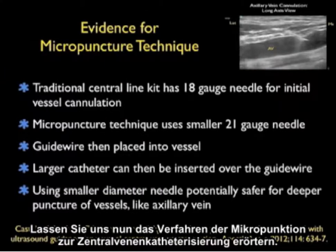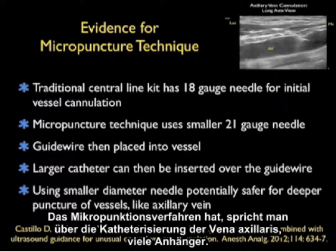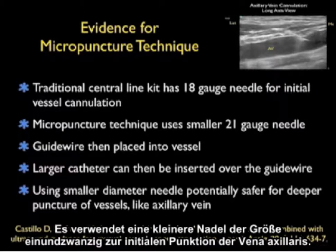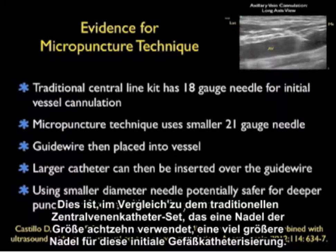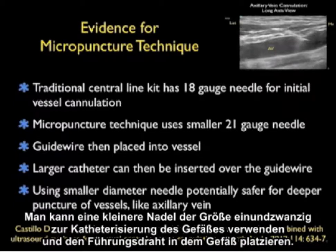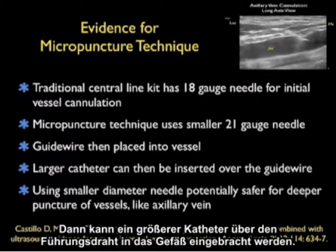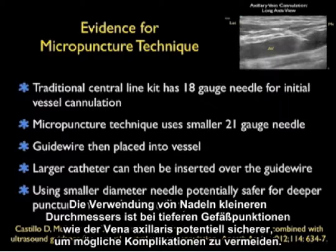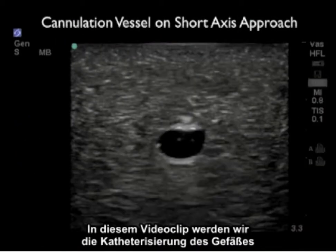Now let's discuss the micropuncture technique for central venous cannulation. The micropuncture technique is well-advocated for axillary vein cannulation as it uses a smaller 21-gauge needle for the initial puncture, in contrast to a traditional central line kit which uses a larger 18-gauge needle. The smaller needle is used to cannulate the vessel and place a guide wire, over which a larger catheter is then inserted. Using these smaller diameter needles is potentially safer for deeper puncture of vessels like the axillary vein to avoid complications.